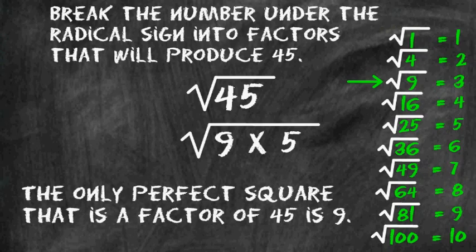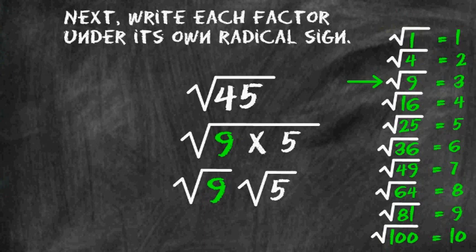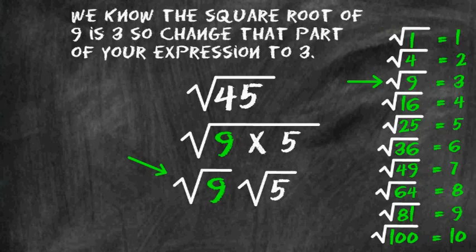After you have found two factors that will produce a number under the radical sign with one of them being a perfect square, you can write each one of the factors underneath their own radical signs. So we are going to take the square root of 9 and write that separately from the square root of 5. We know that the square root of 9 is 3, so directly underneath the number 9 we can write the answer 3.